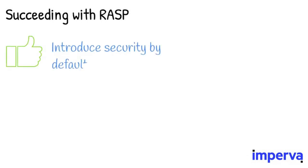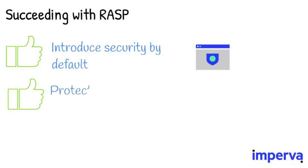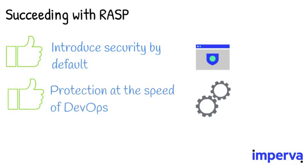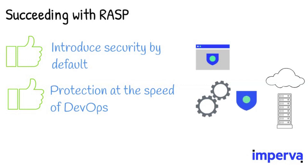But what if there is a way to protect apps wherever they live and however they are deployed? Introduce security by default — RASP protects your applications from known and unknown vulnerabilities by default. Protection at the speed of DevOps: after configuration, RASP can be added to any existing DevOps build pipeline, traveling with the app wherever it goes, whether that's in containers, on-premises, or in the cloud. RASP provides DevOps teams unprecedented visibility from inside the app.